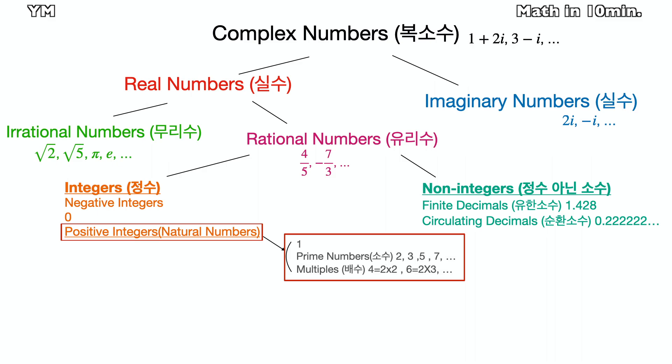These can be divided into three parts, which are 1, prime numbers, and multiples. Of course, it can be divided into odd and even. And then, the numbers are expanded to integers. The integers include negative numbers and 0, as well as natural numbers.